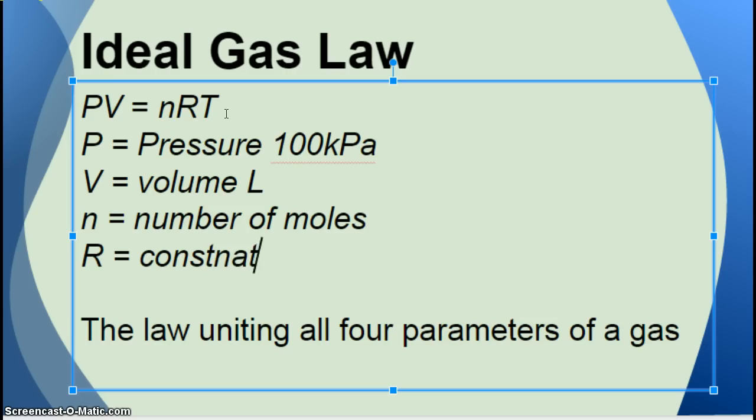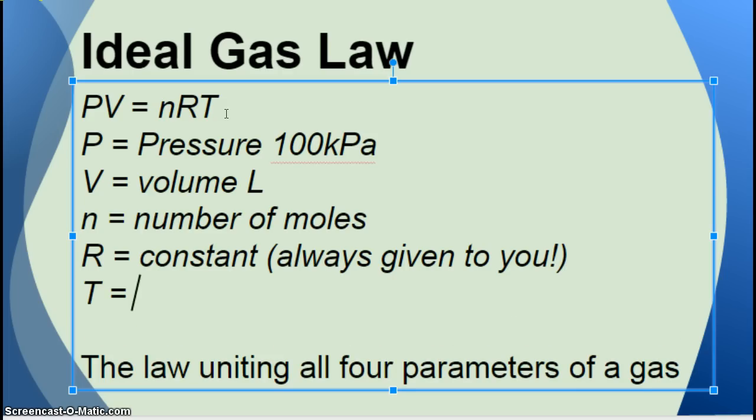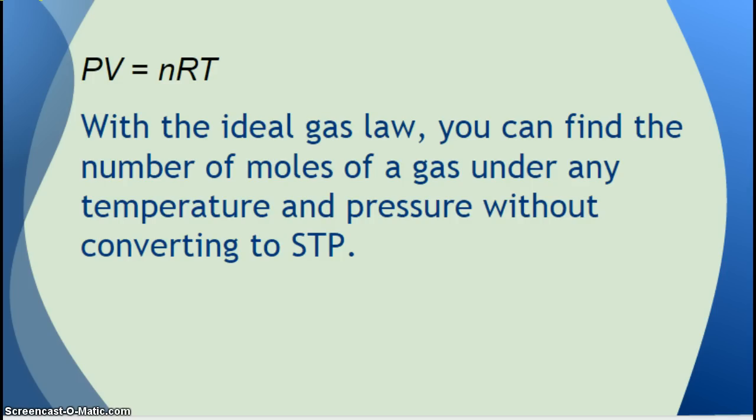R is a constant. So this one is always given to you. It's like this magic number that they need to use to make everything else in the equation work out. Obviously, it's not magic. Obviously, a lot of people spend a lot of time and energy to figure out what R is. And I'll show you what R is coming up. But you don't have to worry about how they did it. You just plug in the number. And then T is what? Temperature. And what is the unit that we have to use? We have to use Kelvins. With the ideal gas law, you can find the number of moles of a gas under any temperature and pressure without converting to STP. So that's why they use it.